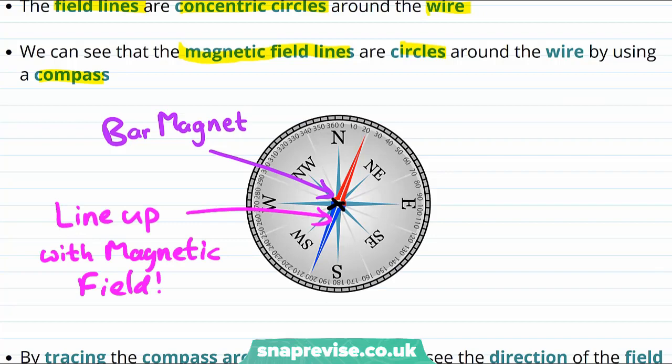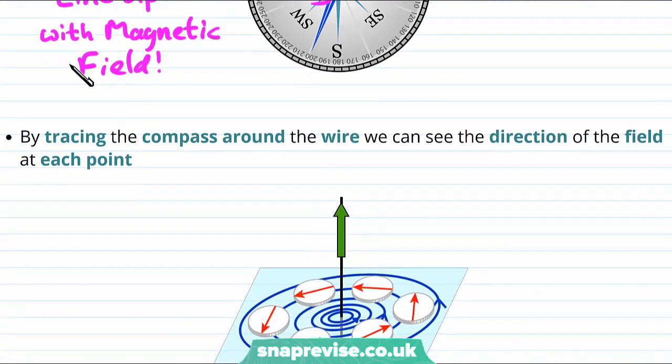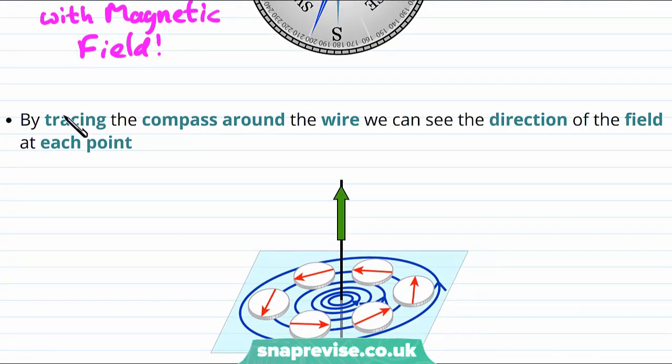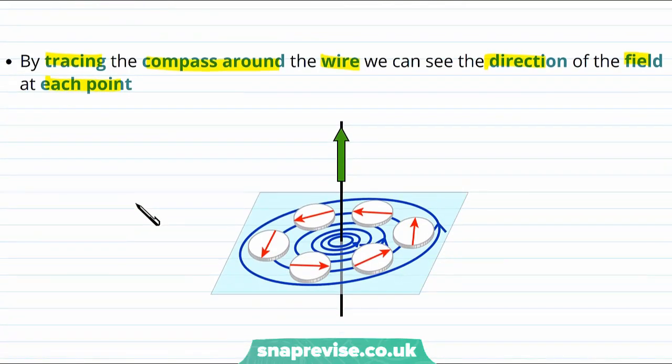So because the needle of the compass will line up with the magnetic field, by tracing the compass around the wire we can see the direction of the magnetic field at each point. And so by putting the compass in different places around the wire we can draw what the field will look like at each point. And we can learn that the magnetic field goes round in a circle around the wire.